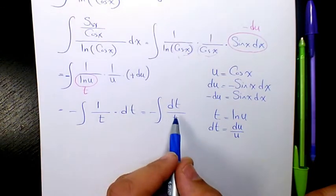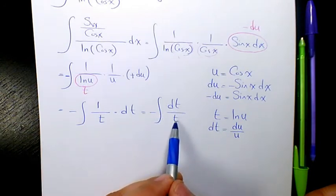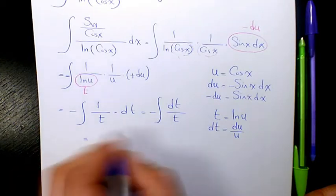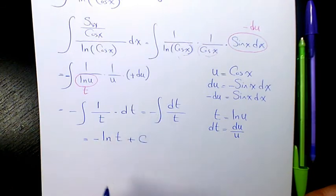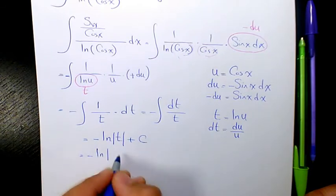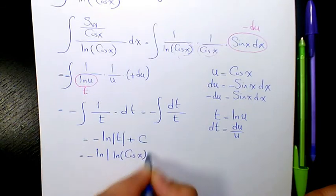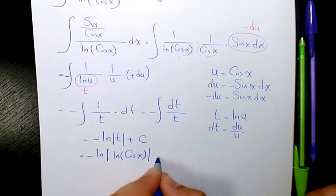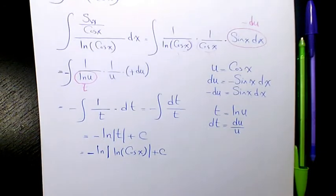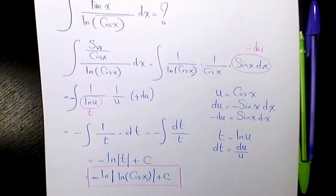Now I need to find the integration of dt over t, which is ln(t) plus C. Applying the negative, it's gonna be negative ln(t) plus C. What is t? t is ln(u), and what is u? u is cos(x). So the final answer is negative ln(ln(cos(x))) plus C. I hope you enjoyed this video — please leave me a comment if you have any questions, thank you for watching and have a great day.